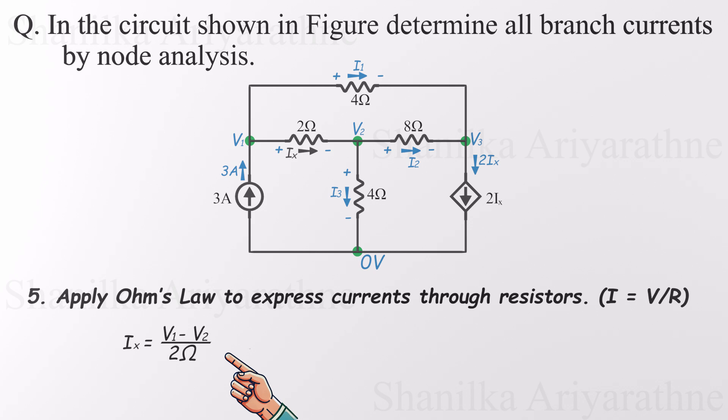For the 2 ohm resistor, the current IX is V1 minus V2, divided by 2. For the 4 ohm resistor between V1 and V3, the current I1 is V1 minus V3, divided by 4.